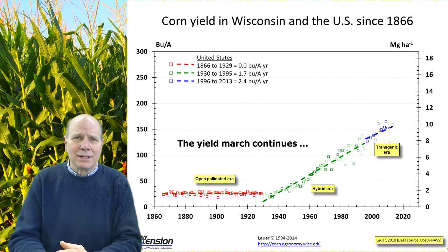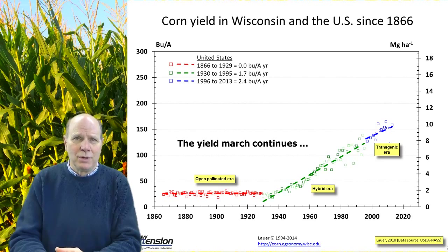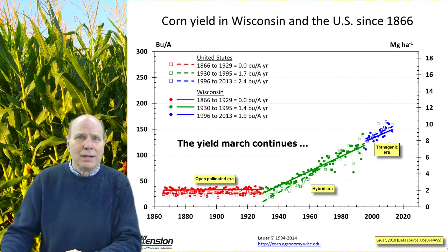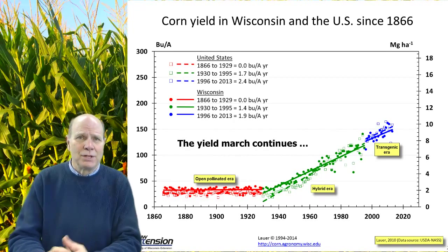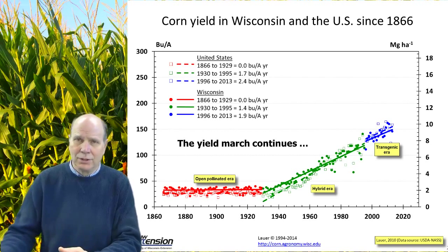But in 1996, another major step occurred where we started to grow transgenic hybrids within the U.S. And since that time, we've seen a yield increase of 2.4 bushels per acre per year in the U.S. In Wisconsin, the rates of increase haven't been quite as much, but they still are very positive, ranging from about 1.5 to 2 bushels per acre per year.